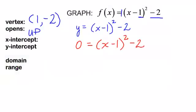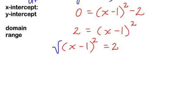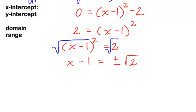The easiest way to solve this is to use the square root property. I have x minus 1 squared; I want to get that by itself, so I will add 2 to both sides. I like my x on the left, so I will switch sides. Taking the square root of both sides, the square root of something squared is just whatever is underneath the radical — it will be x minus 1. Don't forget, when you take the square root of both sides, it will be plus or minus. The square root of 2 is not a nice number, so we leave it as radical 2. I will add 1 to both sides, and my x-intercept will be 1 plus or minus radical 2.